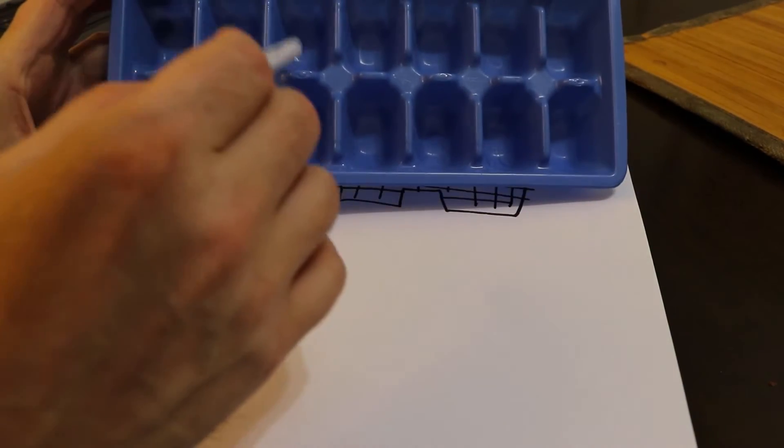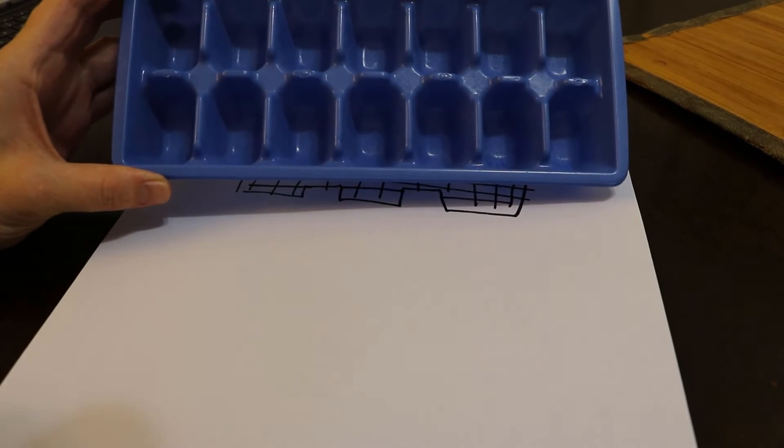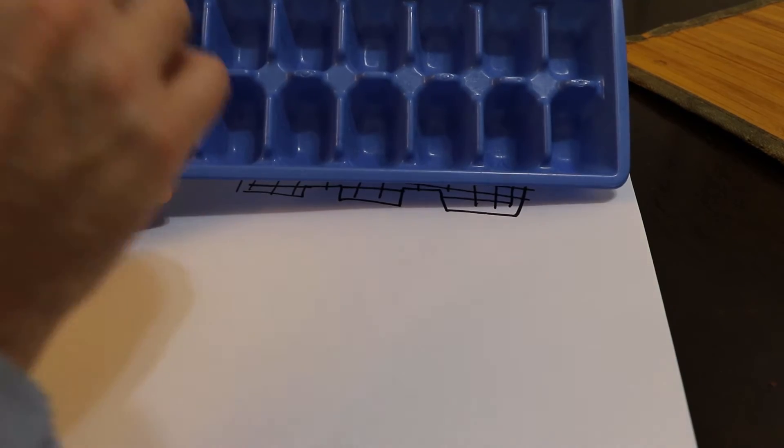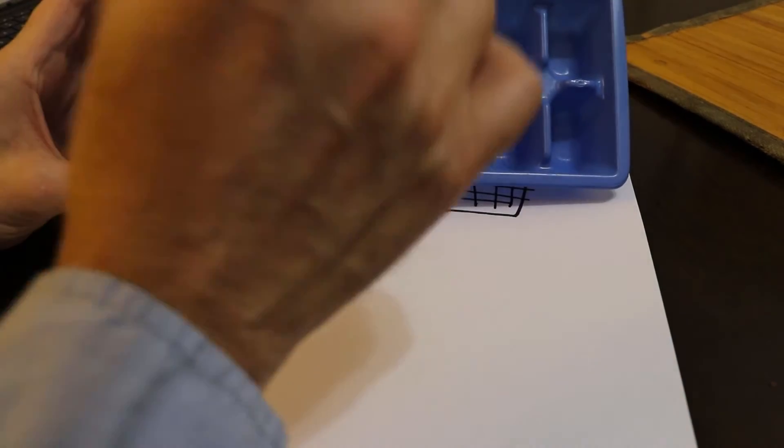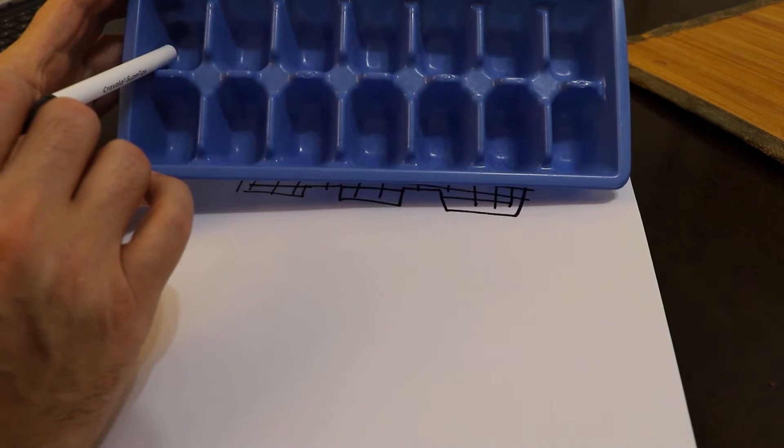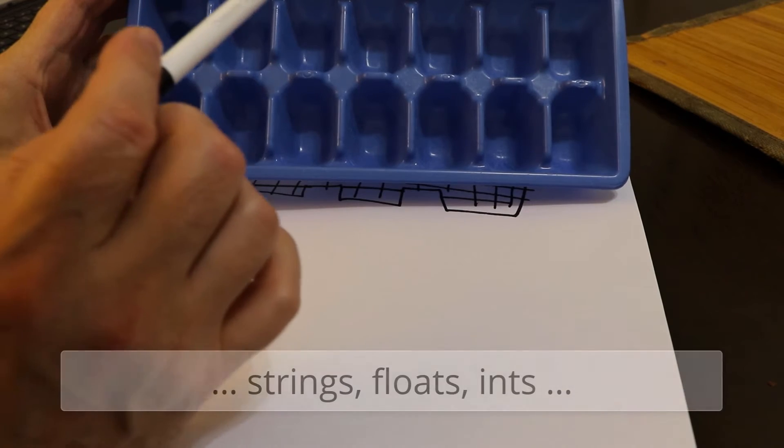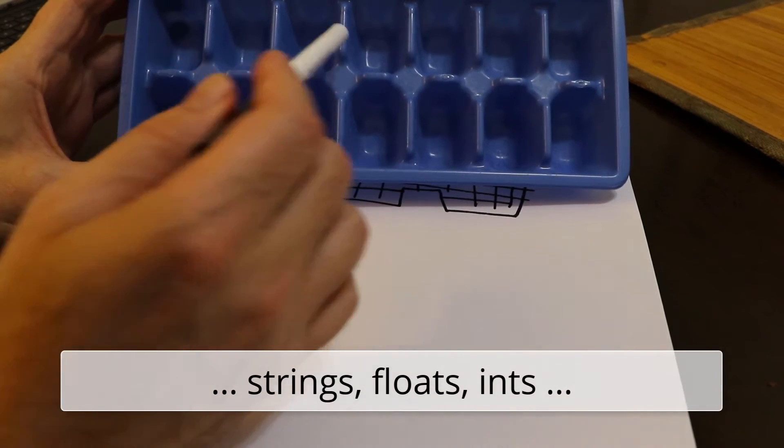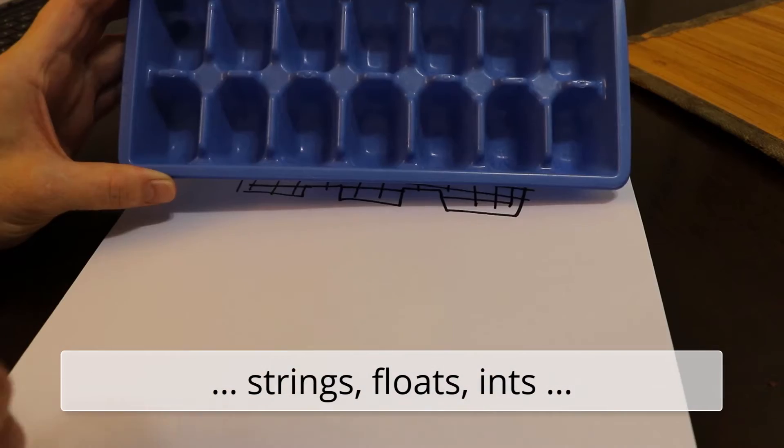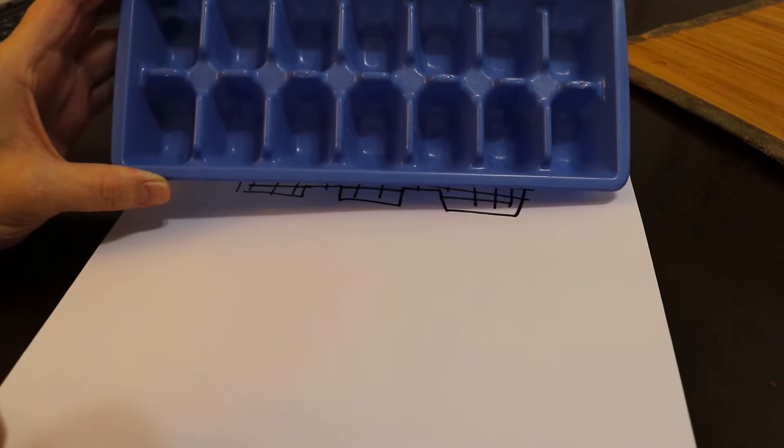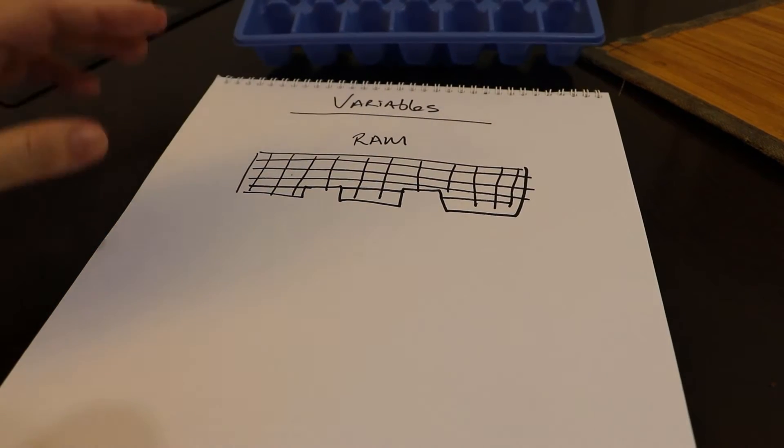And each of these slots is a spot in memory. RAM is random access memory, so it's memory. Each of these spots is kind of like a spot in an ice cube tray, where in each spot you can put information. Sometimes information can be text, sometimes numbers, sometimes floats, and there are many other data types. We've learned about data types, right? So that's RAM.